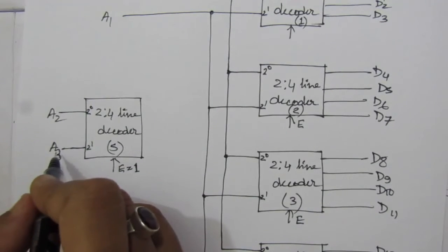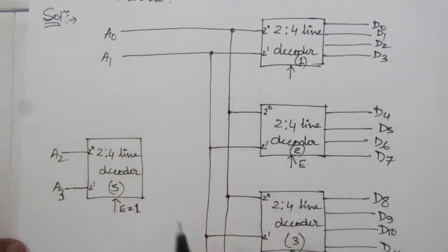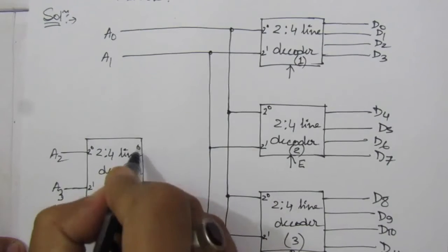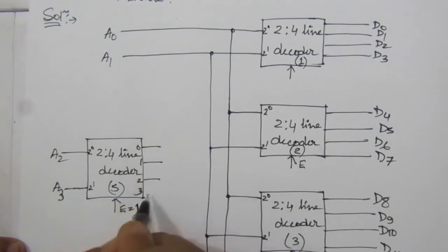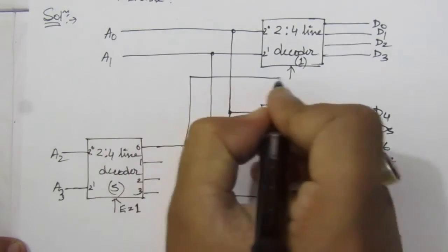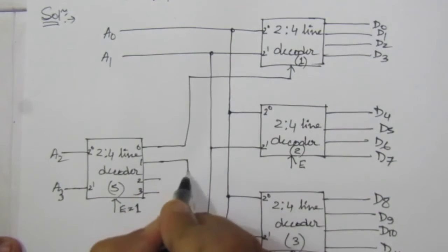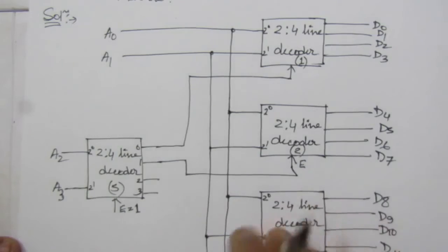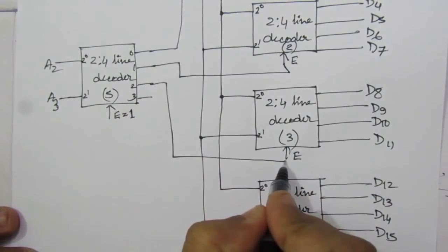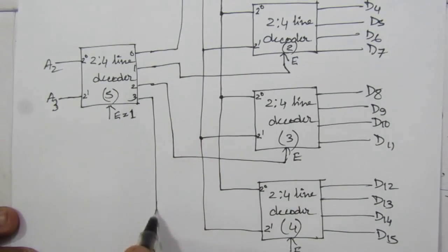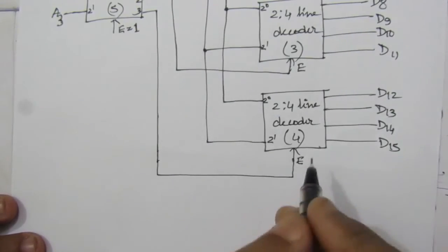Here A3 is the most significant bit, then A2, then A1, and A0 is the least significant bit. The 5th decoder has 4 outputs: 0, 1, 2, 3. These output lines are connected to the enable inputs of the first four decoders — output 0 to decoder 1's enable, output 1 to decoder 2's enable, output 2 to decoder 3's enable, and output 3 to decoder 4's enable.